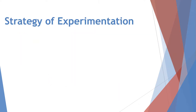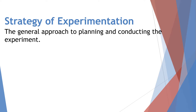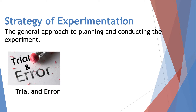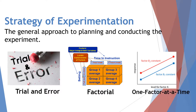Let us now discuss the strategy of experimentation. The strategy of experimentation is generally the approach to planning and conducting the experiment. There are three strategies: trial and error, factorial, and one factor at a time. For trial and error, the test being conducted is continuous almost indefinitely, switching the levels of one or two factors for the next test based on the outcome of the current test. For the factorial strategy, factors are varied together instead of one at a time.